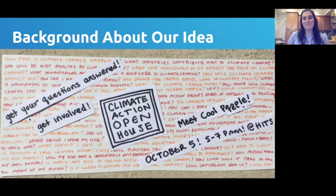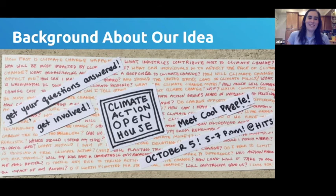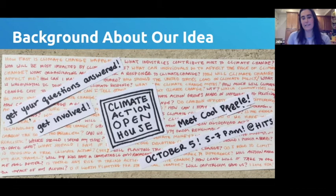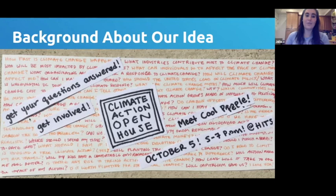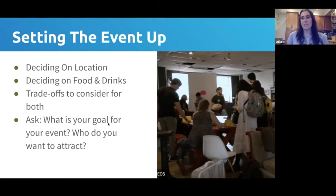Similar to Bill's party, we did six or seven stations. We had a drink station with climate cocktails. We had practice an elevator speech like Bill had, and a climate science station where people could look through major reports like the national climate assessment. The most important thing that set the stage was deciding on the location — which informs who you'll get attending and what you're able to do there.